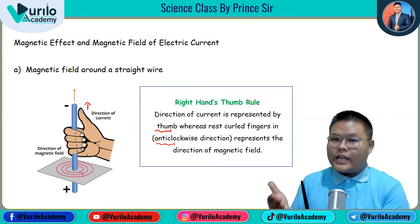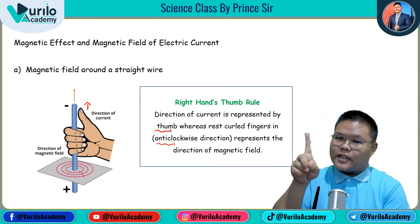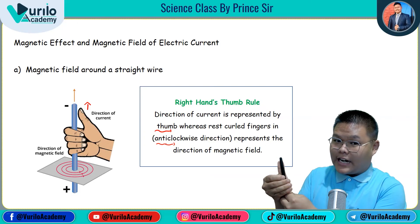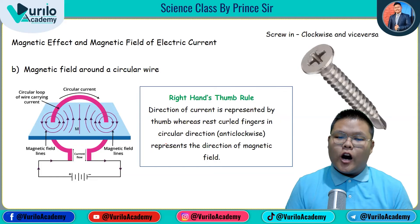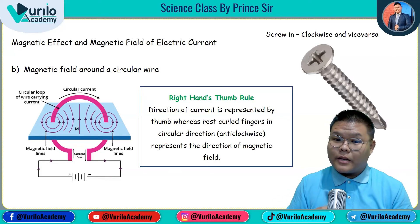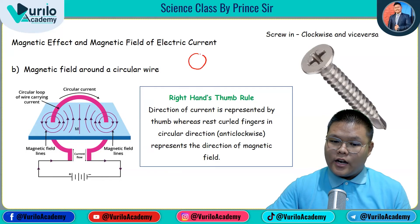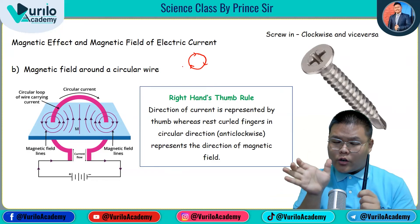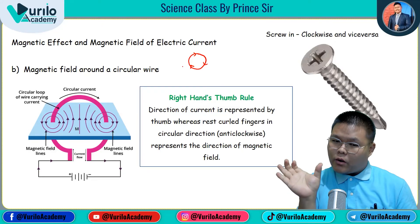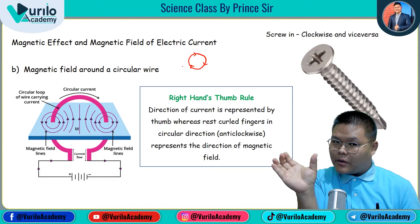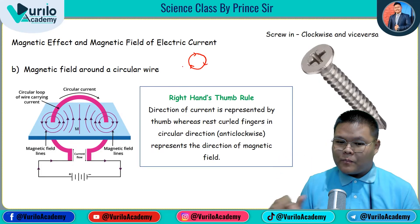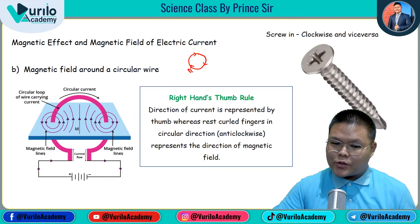Anti-clockwise means opposite to the direction a clock rotates. You place your right hand such that the thumb points in the direction of current, and the curled fingers represent the anti-clockwise direction of the magnetic field. Now, for a circular wire — consider a circular loop. If current flows in a clockwise direction through the circular wire, point your thumb in the direction of current flow.